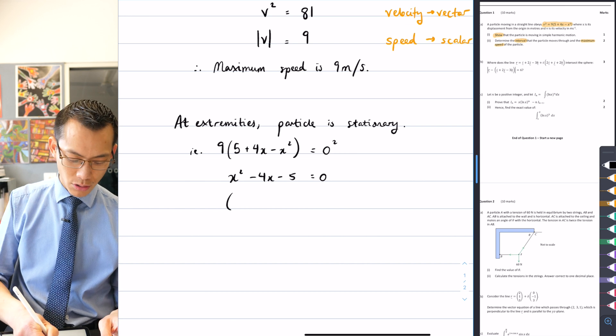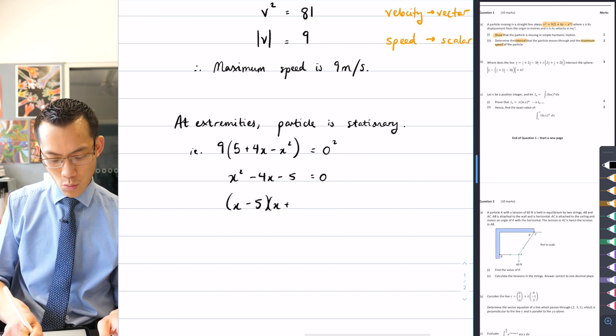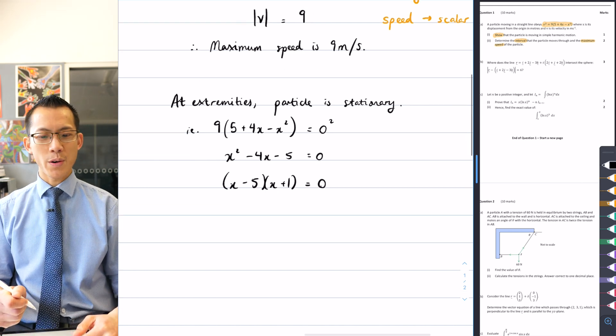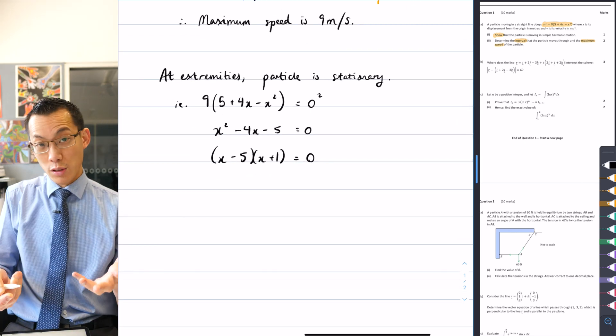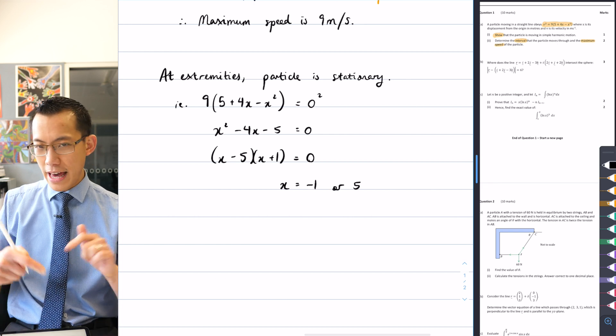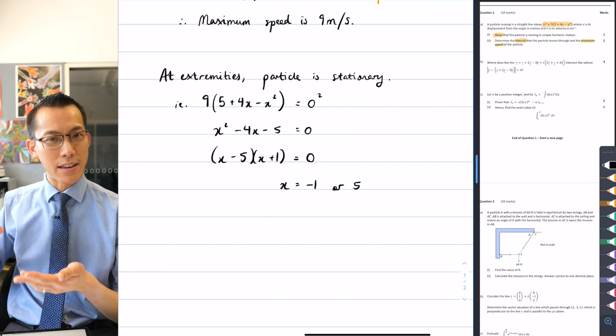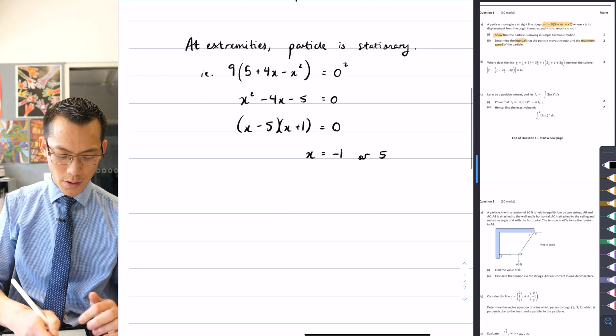The factorization here is not too complicated. It's going to be x minus 5, x plus 1 equals zero. So this tells me that the solution of this is x equals negative one or five. And that doesn't actually answer the question. I need to know the range of motion. So I just need to say that it's between x equals negative one and x equals five.